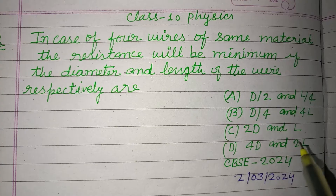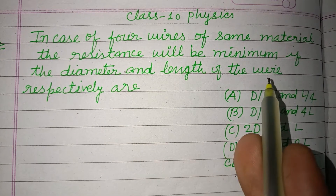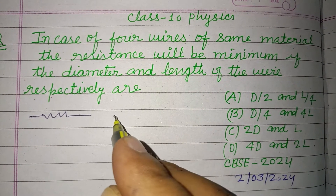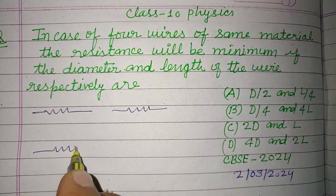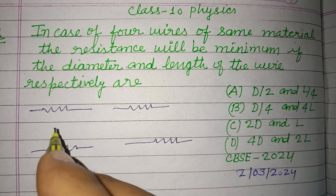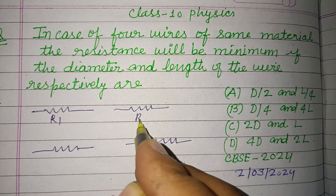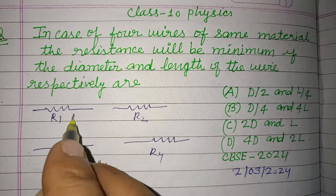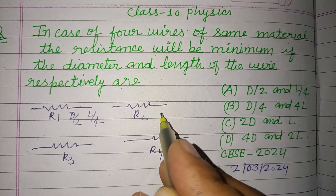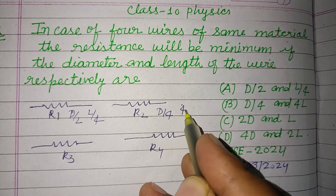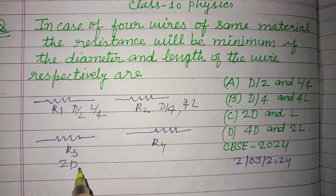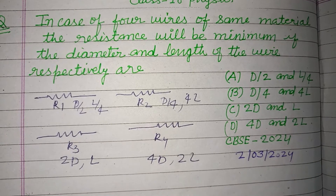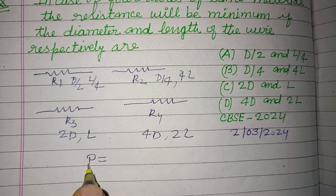Let us label the four wires with resistances R1, R2, R3, and R4. The conditions given are: Wire 1 has diameter D/2 and length L/4; Wire 2 has diameter D/4 and length 4L; Wire 3 has diameter 2D and length L; Wire 4 has diameter 4D and length 2L.